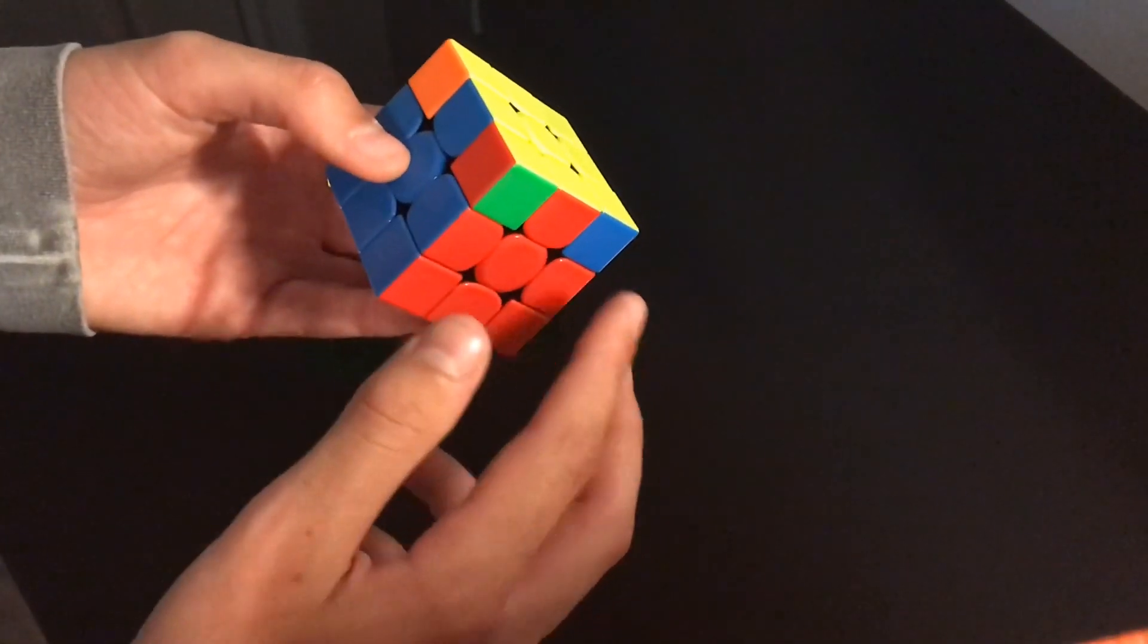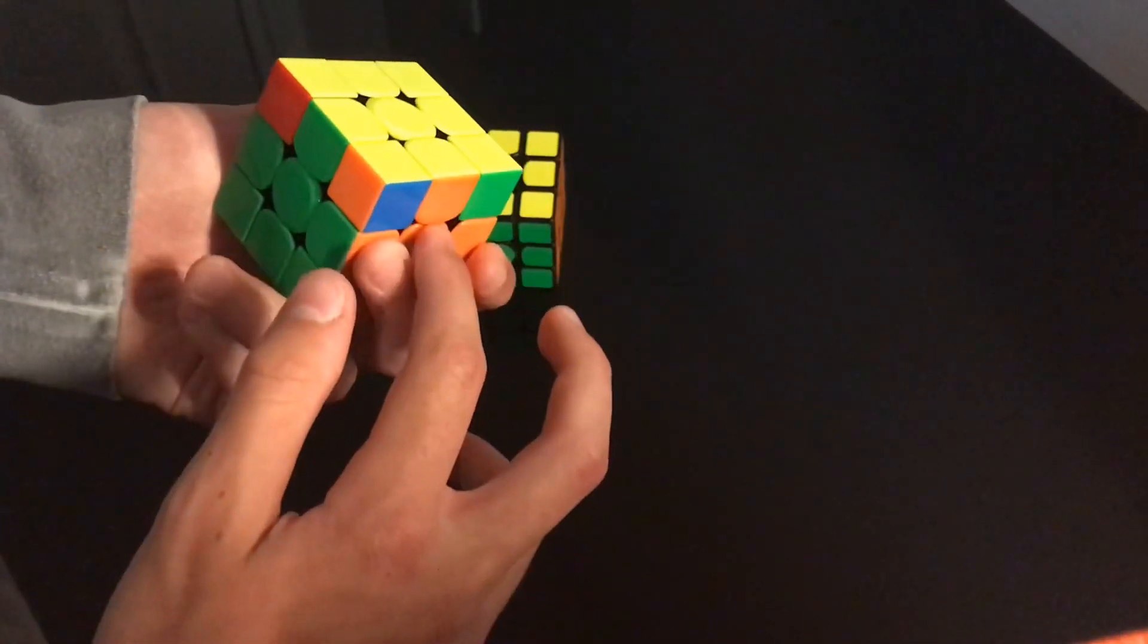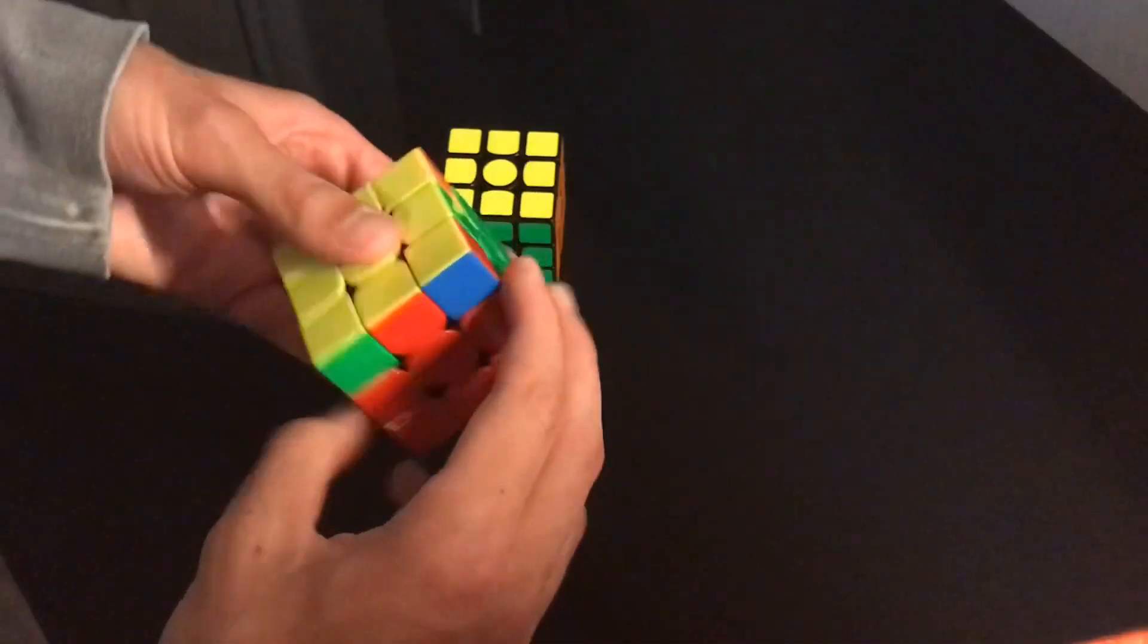So now for the E perm, you're going to realize that these two edges are solved correctly, as well as the rest, so you can recognize it from any angle. Then you can just do your normal alg.